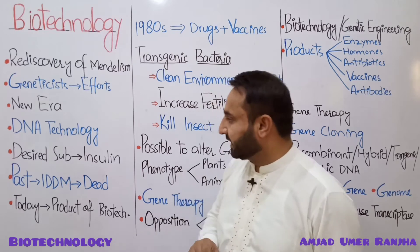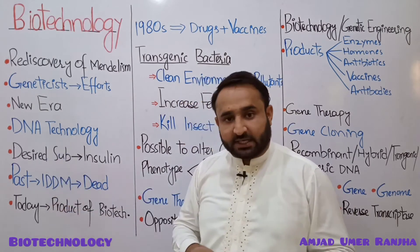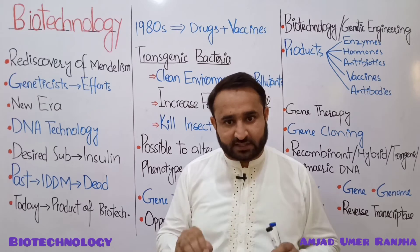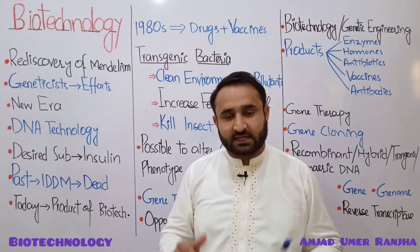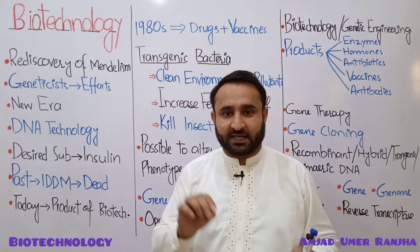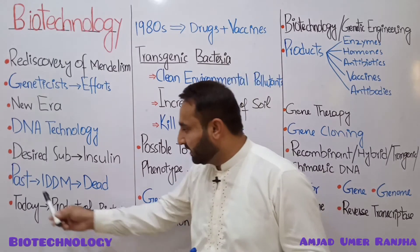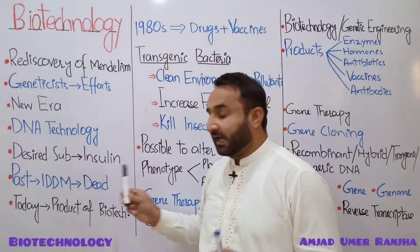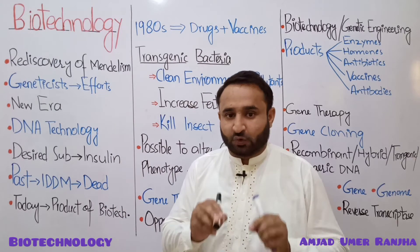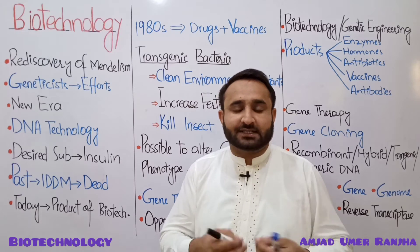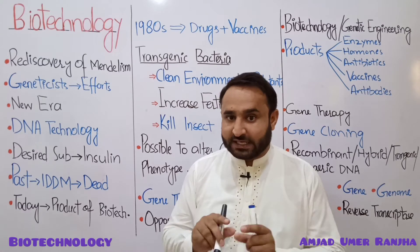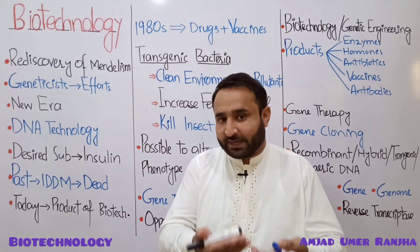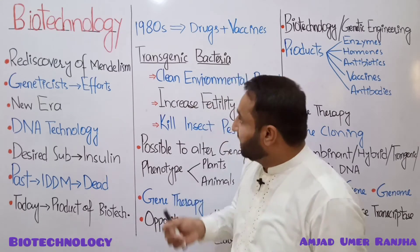Through this field, many desired substances have been produced, such as insulin, which is a hormone used for insulin-dependent diabetes mellitus. It is a human body requirement. People who are diabetic patients cannot produce it naturally, so it is given to them artificially in injection form. In the past, insulin-dependent diabetic patients used to take insulin from dead animals, but today insulin is available in the market as a biotechnology product in injection form.